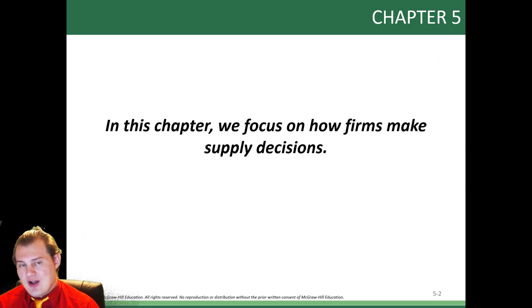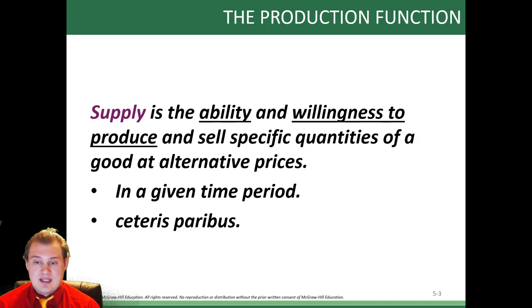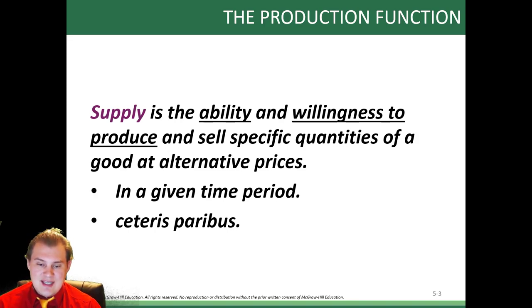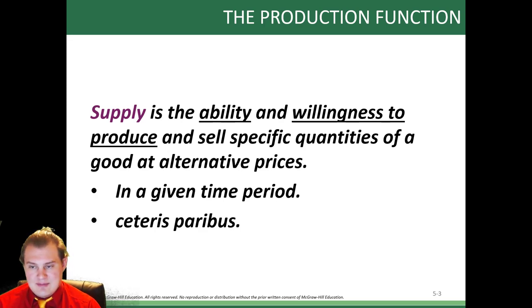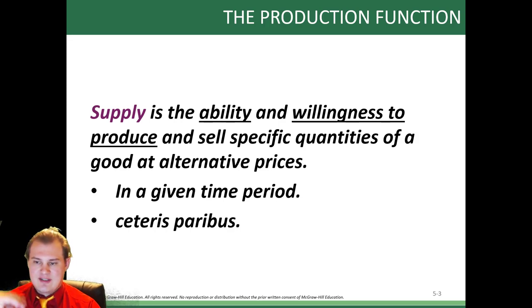Basically, we're just going to talk all about supply and how supply works in economics — a lot of those decisions. Going back to Chapter 3, supply has the ability and willingness to produce. So you have to be able and willing. You sell specific quantities of a good at alternative prices, at a given time period and with everything else remaining the same. That's how we'd calculate what supply is. The main thing you have to remember: willing and able.